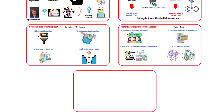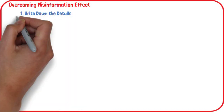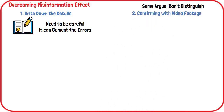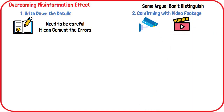Writing down your memory of an important event immediately after it happens is one strategy that might help minimize the effects. Keep in mind that even this strategy can introduce subtle errors, and writing these errors down can further cement them in your memory. Some argue that there is no way to distinguish a false memory from a real one, which creates a challenge not just when trying to remember a particular event, but also in memory research. If there is video footage of the event, reviewing it can help you decide if your memories are real or if they could be false.